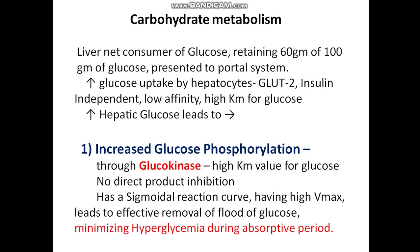In carbohydrate metabolism in the liver during the fed state, the liver is a net consumer of glucose, retaining about 60 grams of every 100 grams of glucose presented to the portal system. This increased glucose is taken up by hepatocytes through GLUT2, which is insulin-independent, has low affinity, and a high Km for glucose. Therefore, hepatocytes take up glucose only when glucose levels are high.